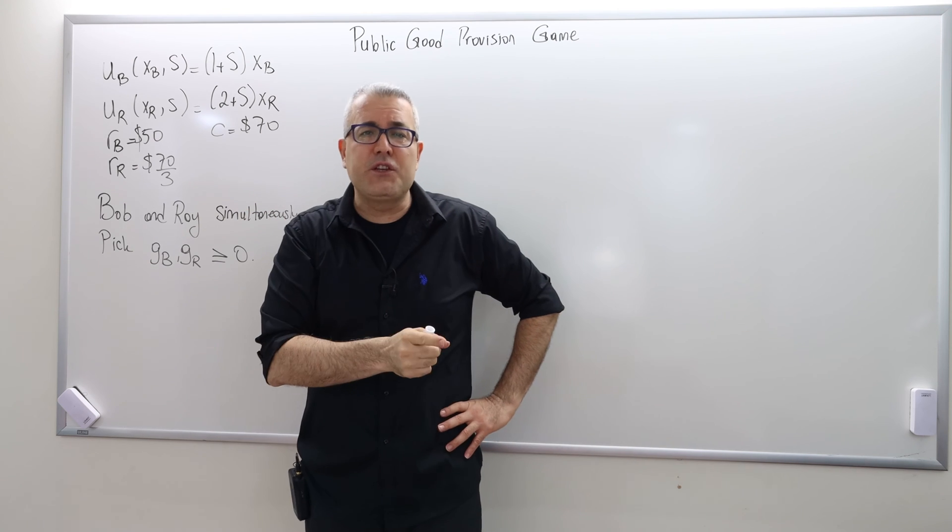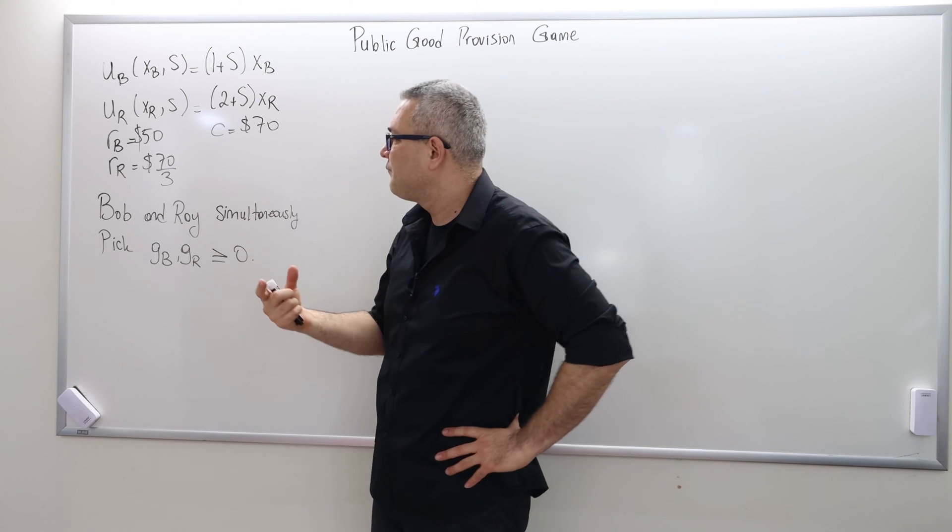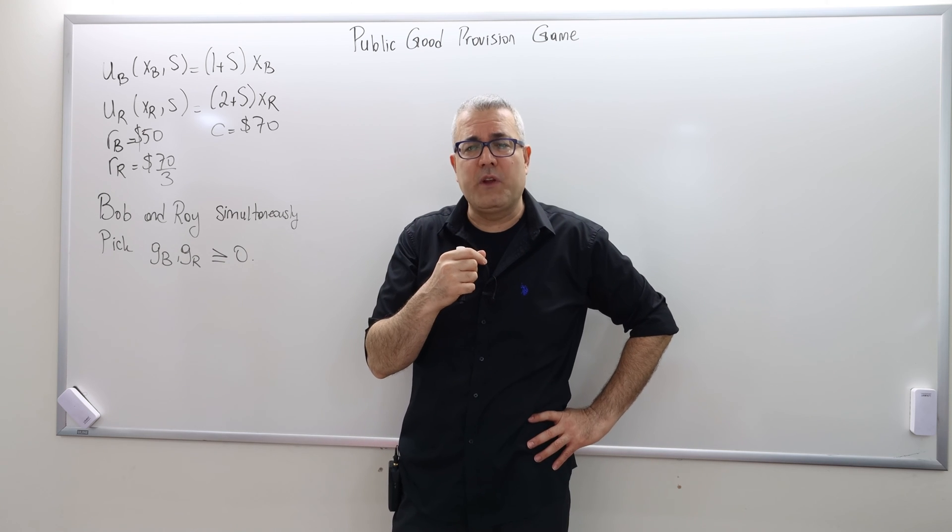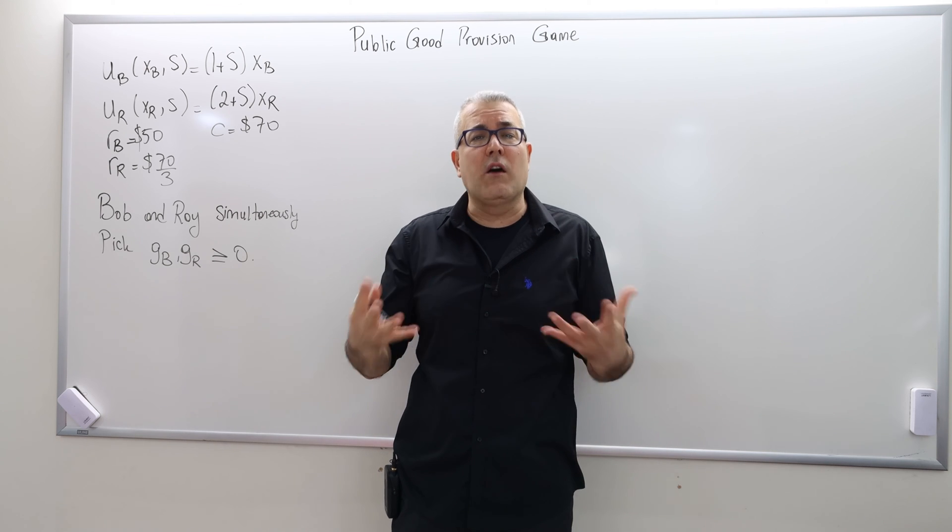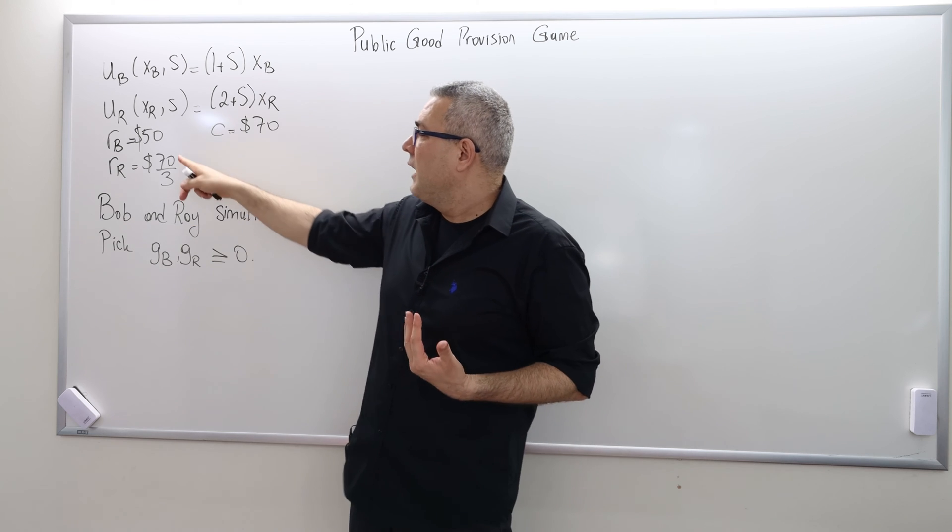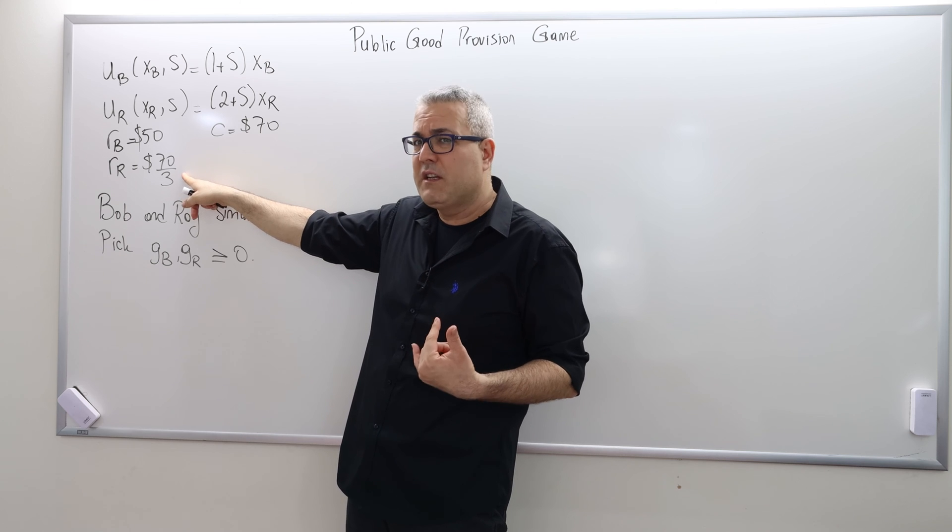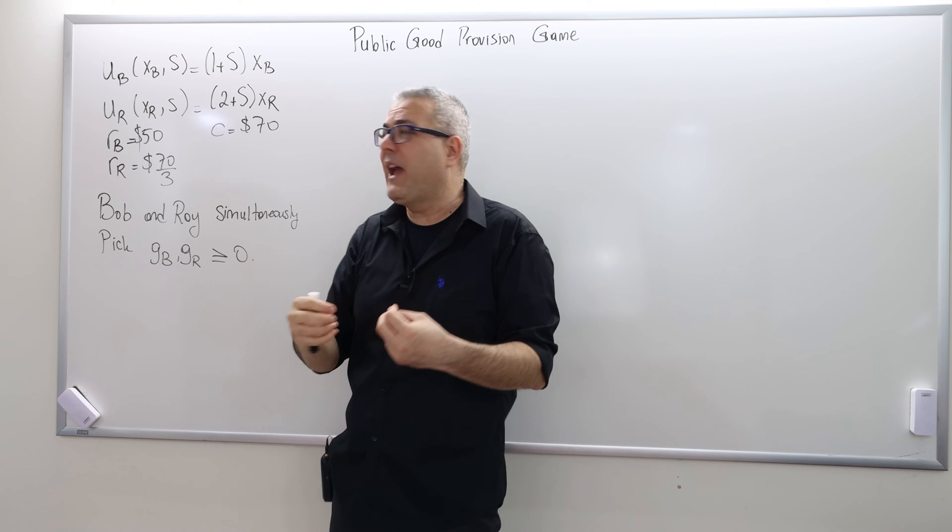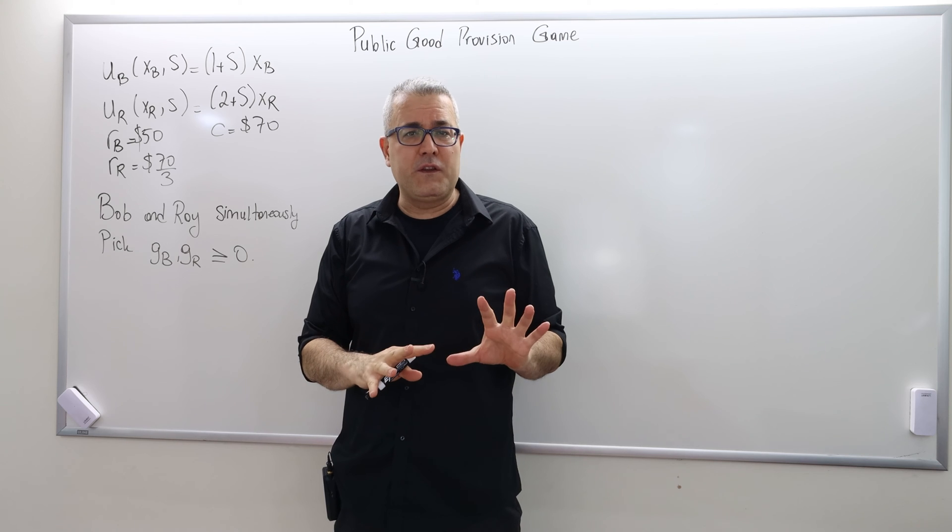And the cost of the sofa was $70, so it is efficient to buy the sofa. Well, how much should they pay? That was the last question we answered. There are actually infinitely many possible Pareto efficient ways of distributing the cost of sofa. As long as Bob pays less than $50 and Ray pays less than $70 divided by 3, and the sum of their contribution adds up to exactly $70, all such contributions are Pareto efficient.